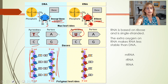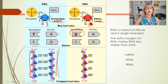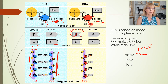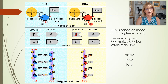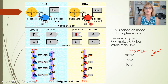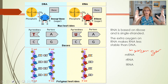DNA is double-stranded. RNA is single-stranded. When we talk about RNA, even for this class, you need to know these three different types of RNA. The first one is mRNA — see that lowercase m? That lowercase m stands for messenger. Messenger RNA is a strand of RNA that carries the instructions of one gene of DNA.